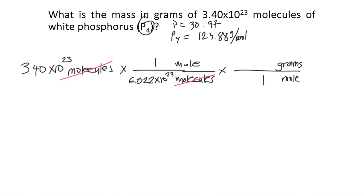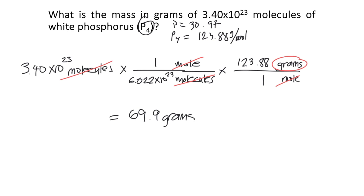So for every 1 mole of P4, that's equivalent to 133.88 grams. The moles will cancel out, and finally we have grams as our unit. All you need to do is solve this using your calculator: 3.40 times 10 to the 23rd, times 1 divided by 6.022 times 10 to the 23rd, times 123.88 divided by 1. You should get approximately 69.9 grams. This is the answer to the question.